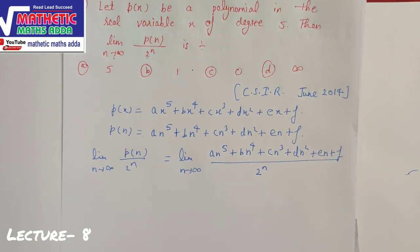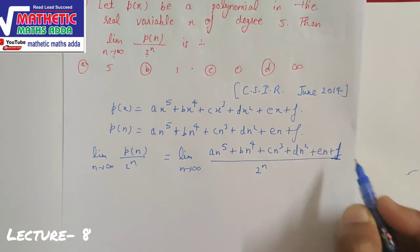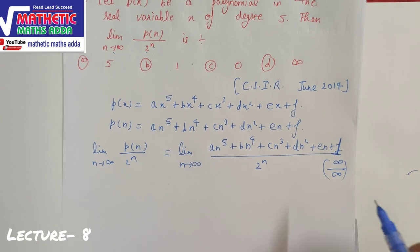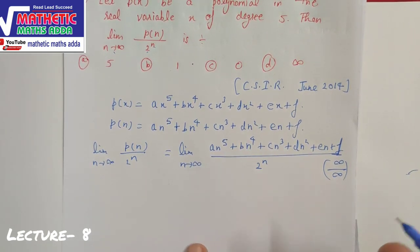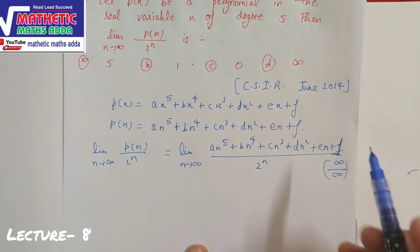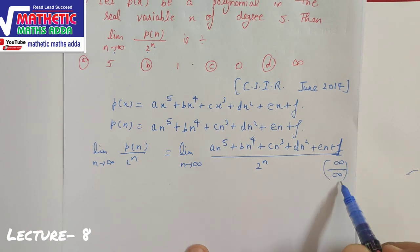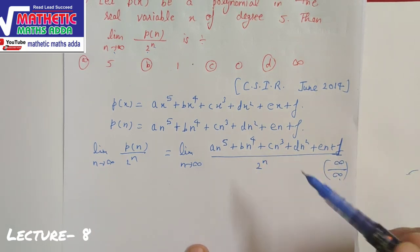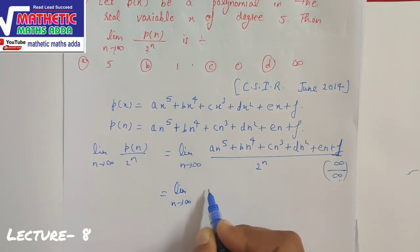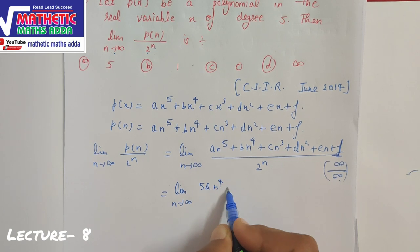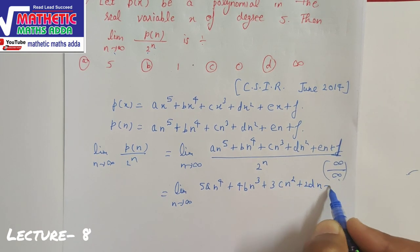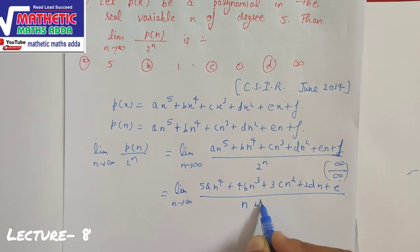When we apply the limit, we get the form infinity/infinity. As seen in previous classes, when we have infinity/infinity or 0/0, we apply L'Hôpital's rule — we differentiate the numerator and denominator separately. Differentiating: numerator becomes 5An⁴ + 4Bn³ + 3Cn² + 2Dn + E (constant F vanishes), and denominator becomes 2ⁿ · ln2.